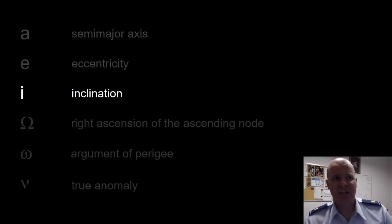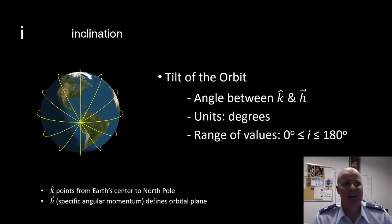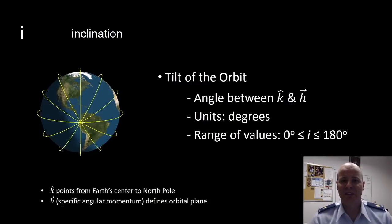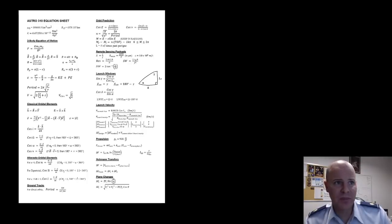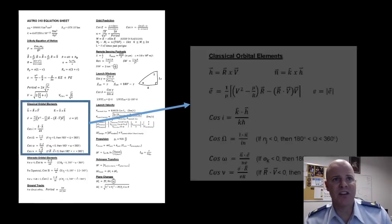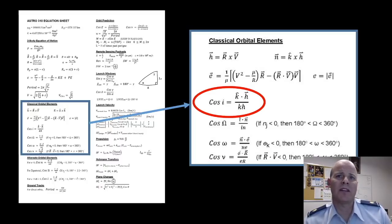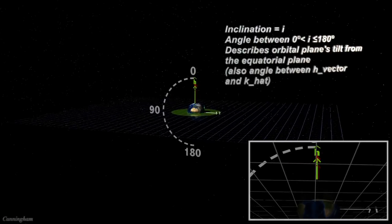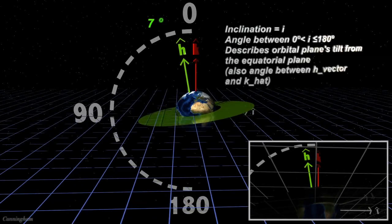This is what it looks like for our eccentricity to change. Next, we have our inclination, which is our first orientation parameter. Inclination, or I, defines the tilt of the orbit. It's defined as the angle between K and H. K is a vector that points from Earth's center to the north pole, and H is the specific angular momentum vector, which defines our orbital plane. Its units are in degrees, and its range of values can be between zero and 180. Its definition is given as: cosine I equals the K vector dotted with the H vector over the magnitude of K times the H vector. This is what it looks like for an orbital inclination to change.